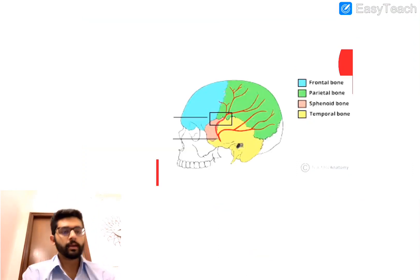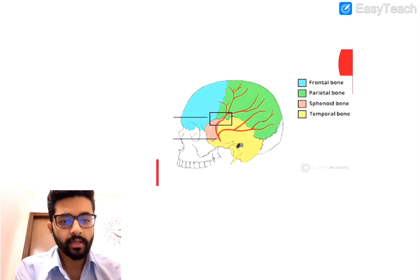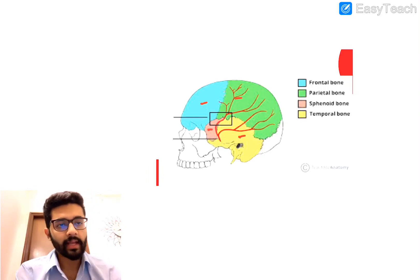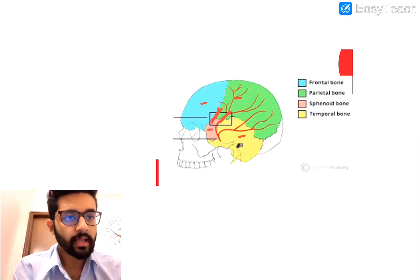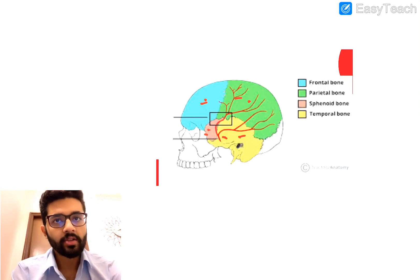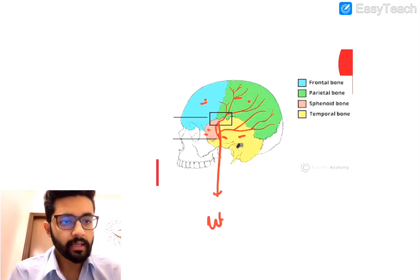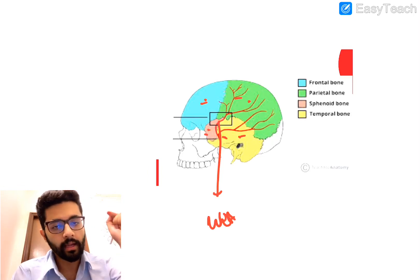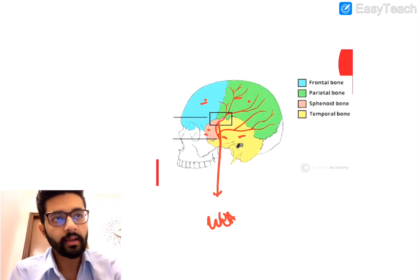The pterion is a meeting point of four bones of the skull found on the lateral aspect. It is a wedge-shaped junction of the frontal bone, parietal bone, sphenoid bone and temporal bone. Damage to this point leads to EDH because the middle meningeal artery lies just below it. It is the weakest point of the skull — a thin plate of bone — and damage here leads to rupture of the middle meningeal artery and development of EDH.